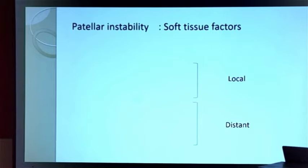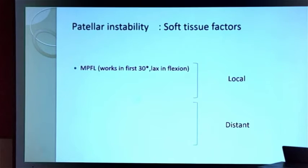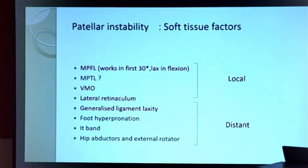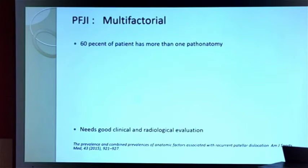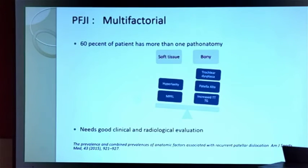There are certain soft tissue factors for patella instability, divided into local and distant. The most important factor is the MPFL, which works in the first 30 degrees. Other structures like VMO, lateral retinaculum, foot hyperpronation, and IT band are other possible factors. Sixty percent of patients have more than one pathoanatomy, and it is the imbalance between these which leads to recurrent dislocation of the patella.